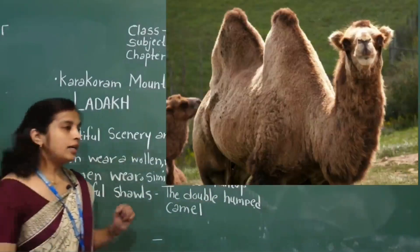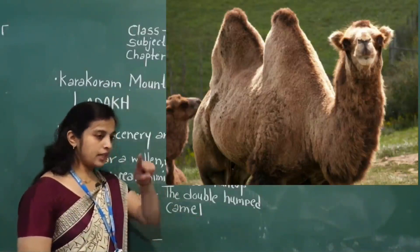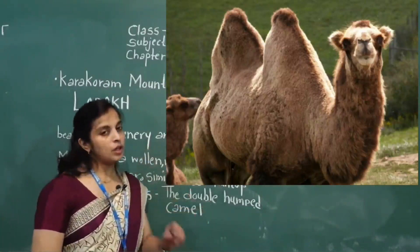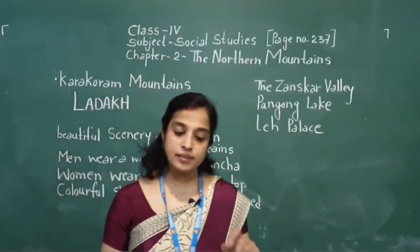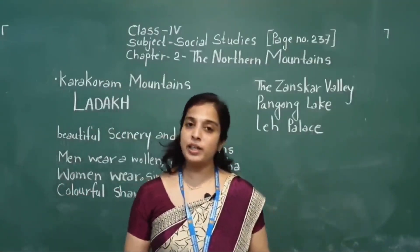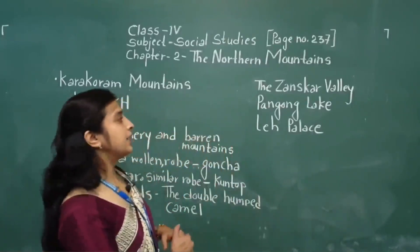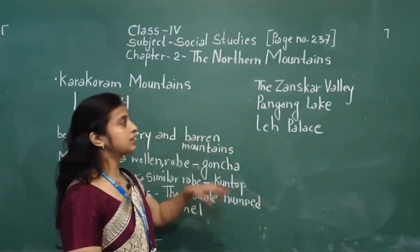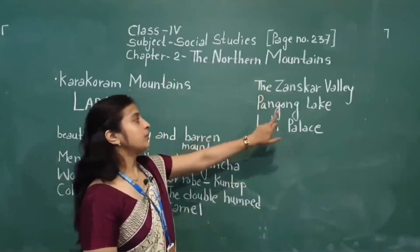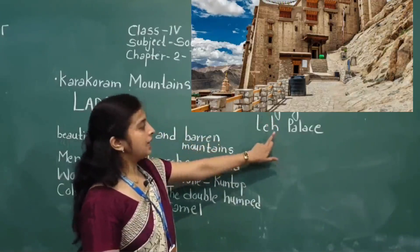The double-humped camel is found only in Ladakh in India. The tourist attraction places of Ladakh include the Zanskar Valley, Pangong Lake, and Leh Palace.